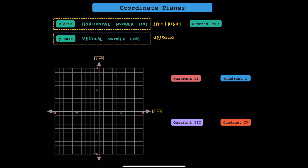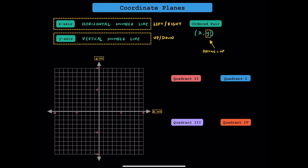To represent the location of a point on a coordinate plane, we use these things called ordered pairs. In an ordered pair, x always comes first and y always comes second. If the value of x is positive, we move to the right on the number line, and if the value of x is negative, we move to the left. And if the value of y is positive, you move up on the y-axis, and if y is negative, we move down.